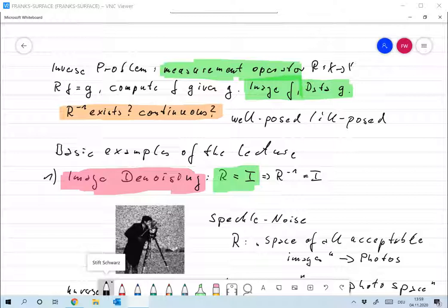Just to remind you, in inverse problems we would like to measure a quantity f, but we cannot do that directly. So we measure some derived data g and this is connected to the image we want, to the quantity we want to measure by an operator R. And so an inverse problem can be summed up mathematically simply as given a measurement operator R and some data g, try to find an image or an element in X such that Rf equals g.